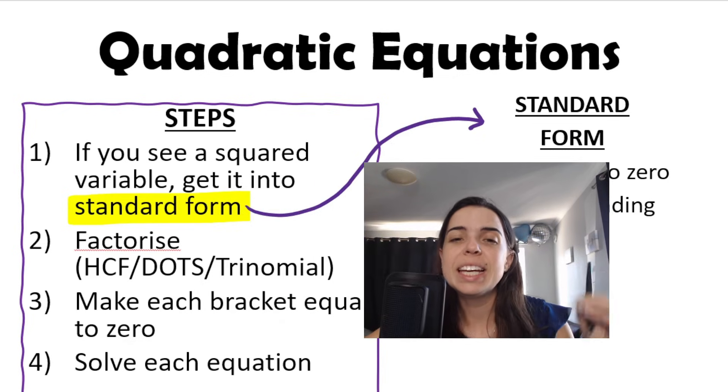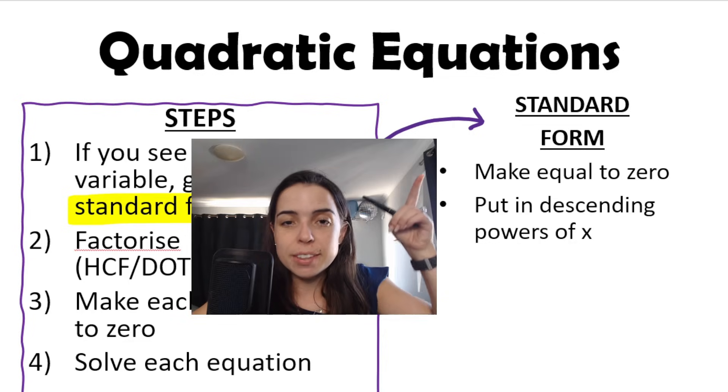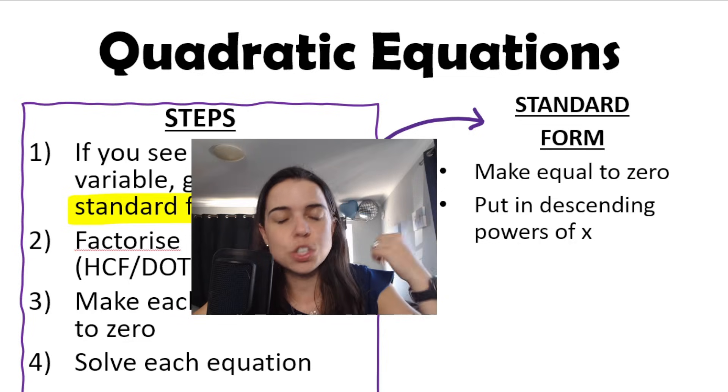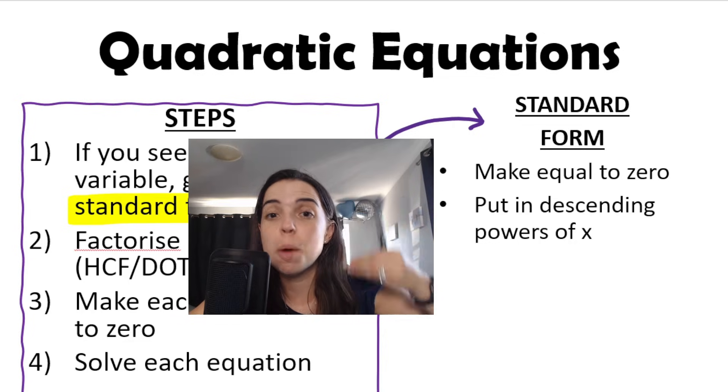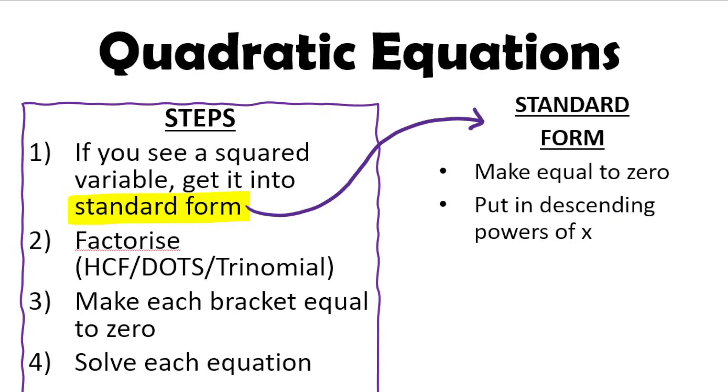If you see a squared variable, get it into standard form. Now, what does standard form mean? We make the equation equal to zero. So if it's not equal to zero yet, we have to make it equal to zero. And it does help to put it in descending powers of x. What that means is x squared goes first, followed by x, descending powers of x.